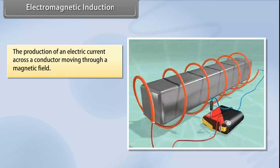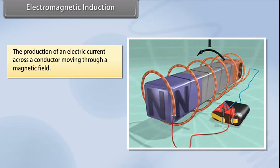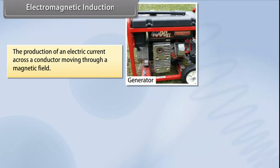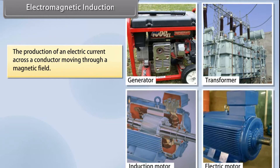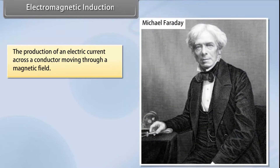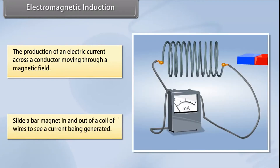The production of an electric current across a conductor moving through a magnetic field is called electromagnetic induction. Generators, transformers, induction motors, synchronous motors, and solenoids all use electromagnetic induction. Michael Faraday, a British scientist, discovered electromagnetic induction. His experiments included generating currents by moving a magnet — sliding a bar magnet in and out of a coil of wires causes the wire to generate a current.